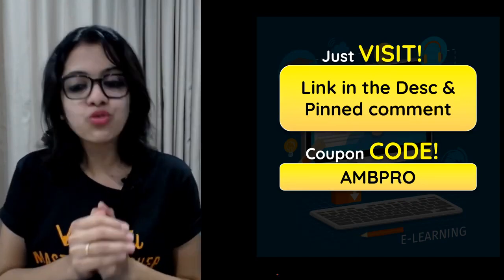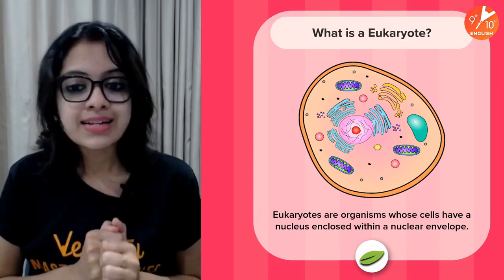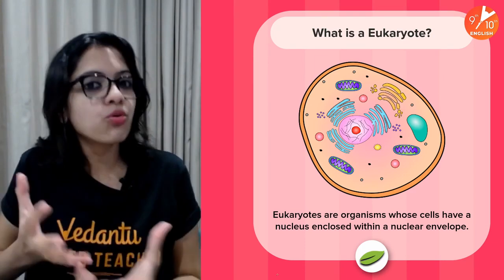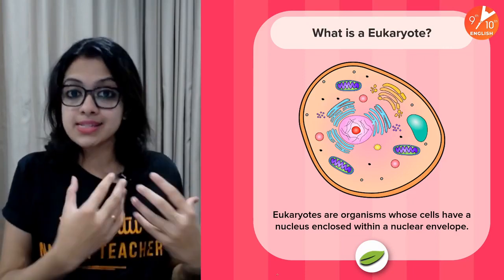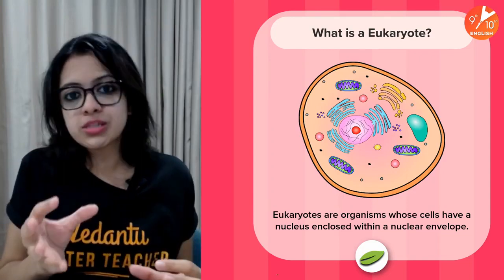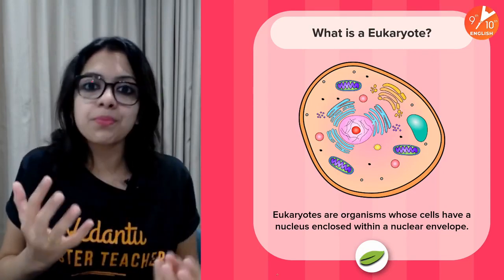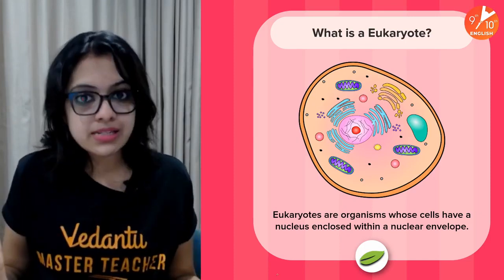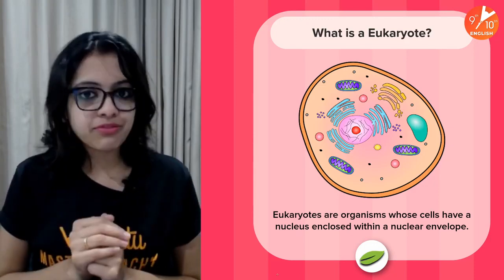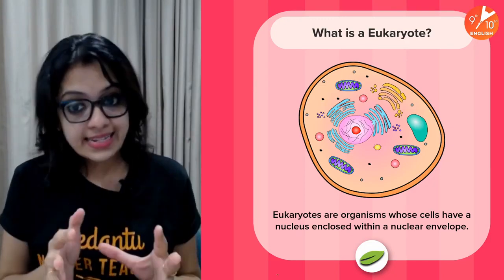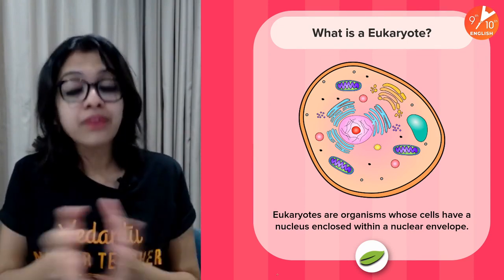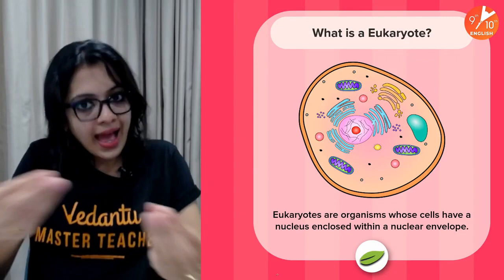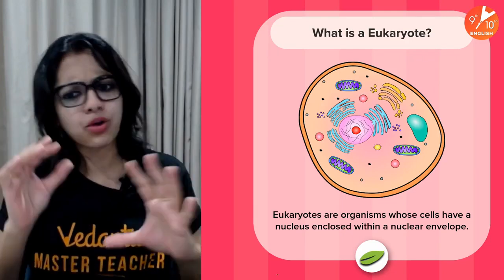So what exactly is a eukaryote? Organisms may either be prokaryotes or eukaryotes. Prokaryotes are said to be more primitive, like bacteria, whereas eukaryotes are said to be more advanced. But it's a misconception to say eukaryotes cannot be unicellular — even amoeba, which is unicellular, is an example of a eukaryote. We complex multicellular organisms are also eukaryotes. The simplest definition: a eukaryote is an organism whose cell has a nucleus enclosed within a nuclear envelope.